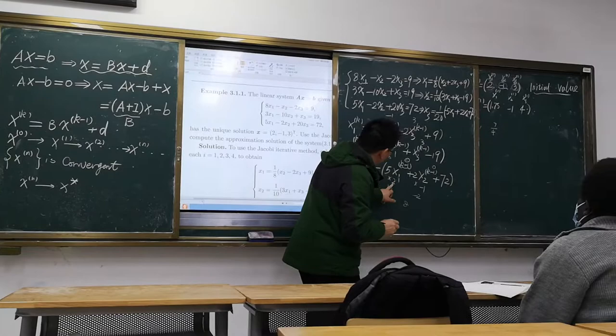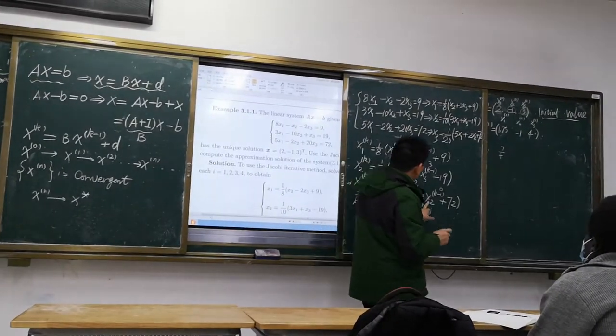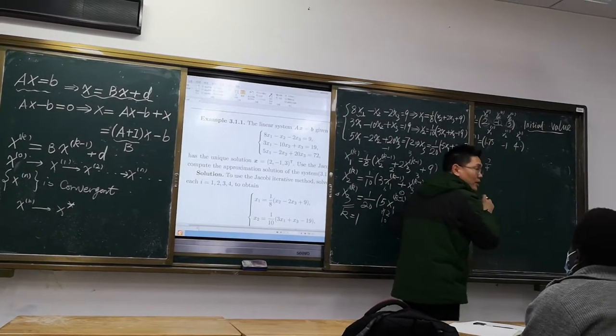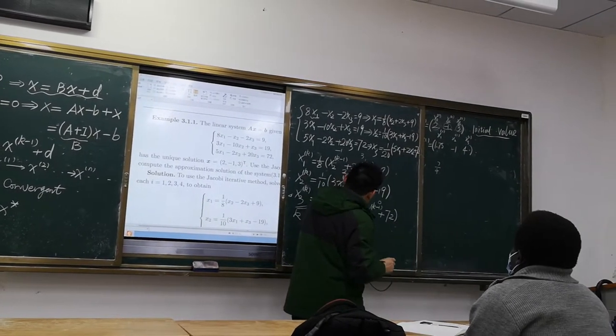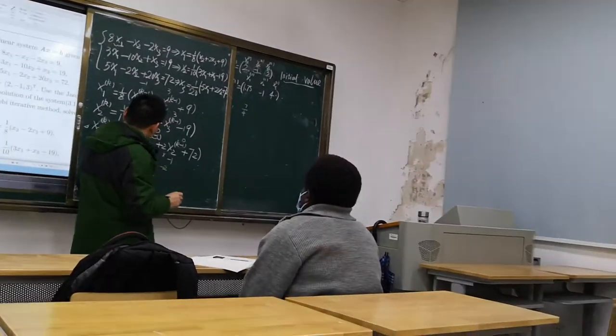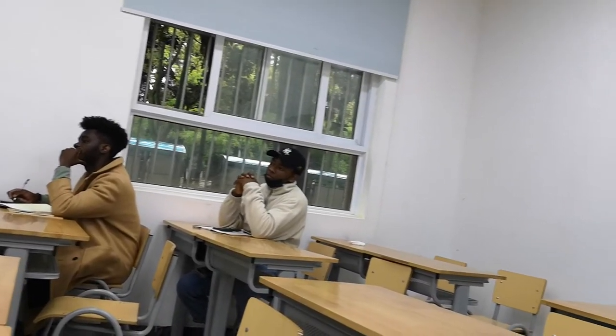So, 5 times 2 is 10, we can get 10. And here is x2,0 is minus 1. So, we can get 2 times minus 1 is minus 2. So, 10 minus 2 and plus 78, 72. So, we can get 80, that's right, 80 over 20, that's 4.